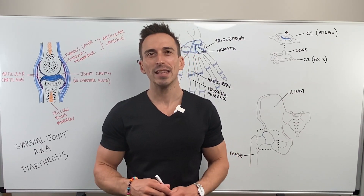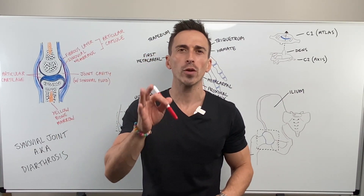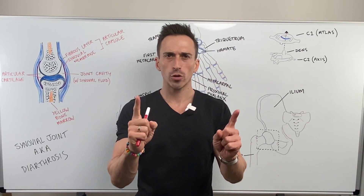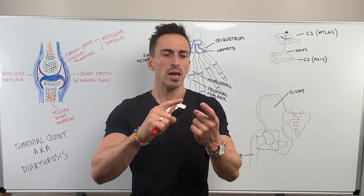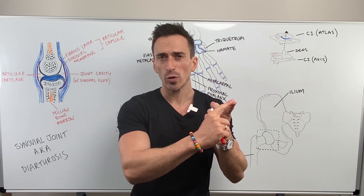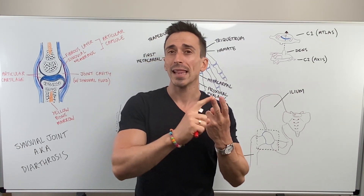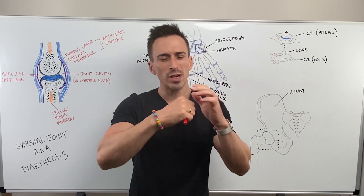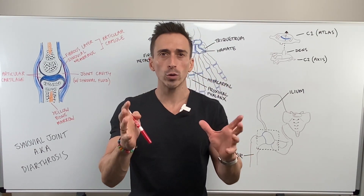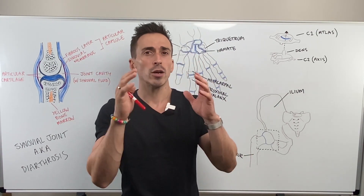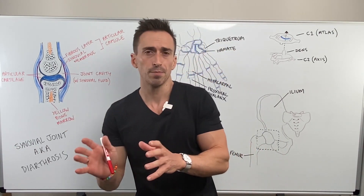Hi everybody, Dr. Mike here. In this video we're going to take a look at synovial joints. The first thing you need to remember is that there are three major joint types in the body: fibrous joints which don't have much movement, cartilaginous joints which have a little bit of movement, and synovial joints which are freely movable. The focus of this lecture is going to be those synovial joints.